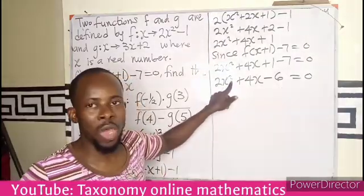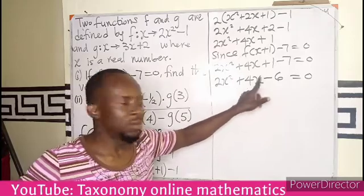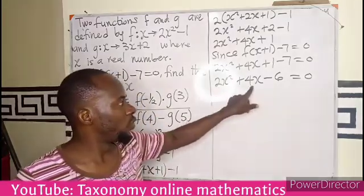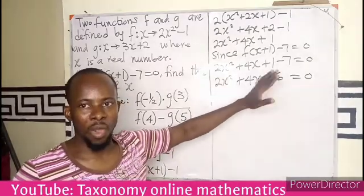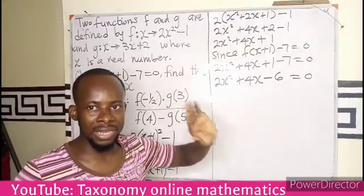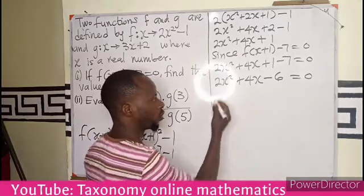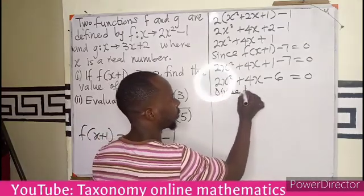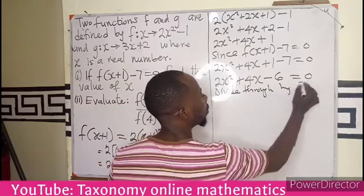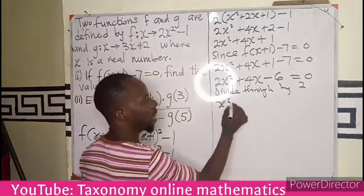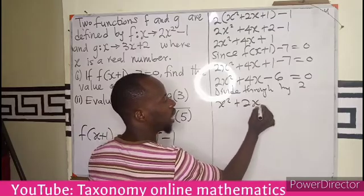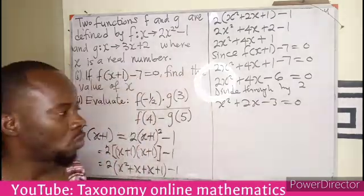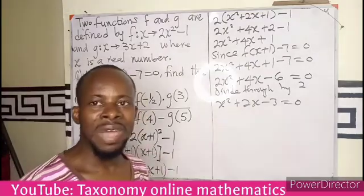I can see 2, 4, 6 — there is a common factor I can divide all three terms by. So I divide through by 2, and I will have x squared plus 2x minus 3 equals to 0. So this is where we factorize.